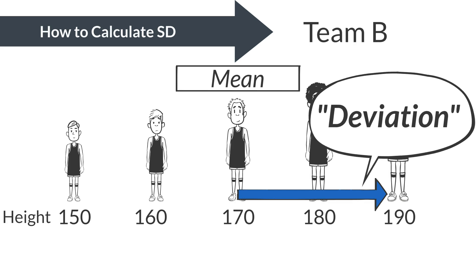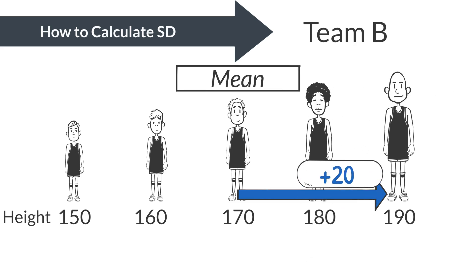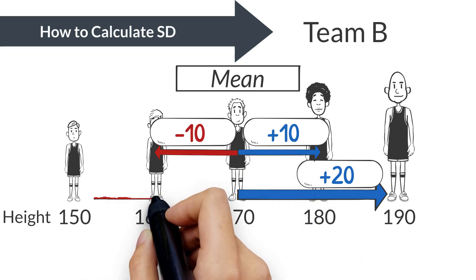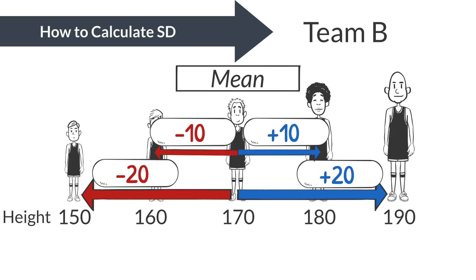The deviation of each data point from this mean is called deviation. For instance, someone 190 centimeters tall has a deviation of plus 20, 180 centimeters is plus 10, 160 centimeters is minus 10, and 150 centimeters is minus 20.